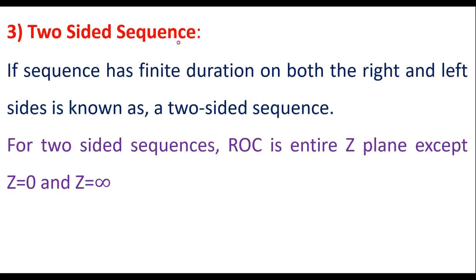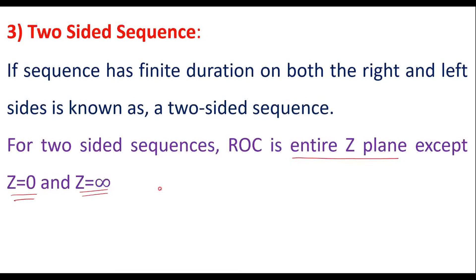A sequence that has finite duration on both the right and left sides is known as a two-sided sequence. For a two-sided sequence, the ROC is the entire Z-plane except Z equal to 0 and Z equal to infinity. Let us take one example of a two-sided sequence and draw the ROC.